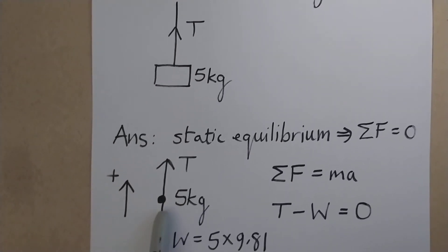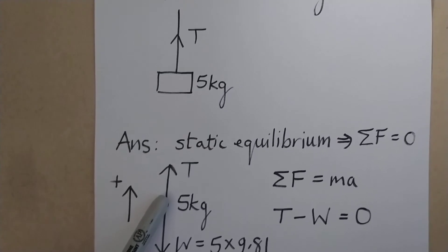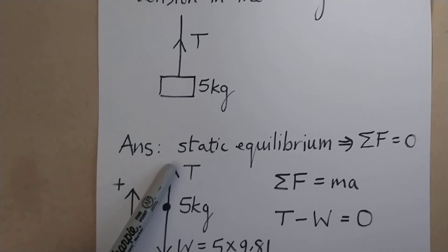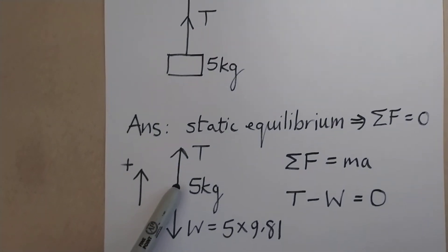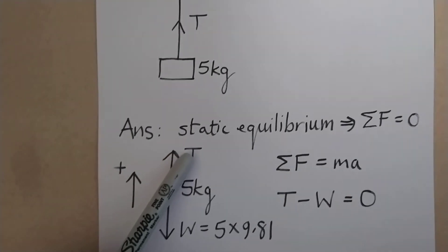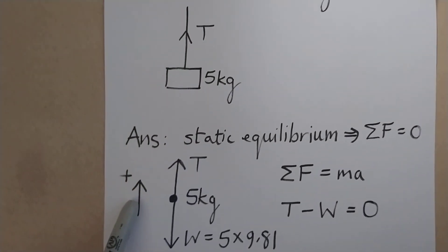Label the weight going vertically downwards, and technically speaking these two arrows should be equal in length. I haven't got them quite right, but they should be equal in length. In this case, tension pointing up, we label a positive direction vertically upwards.